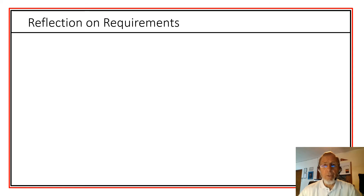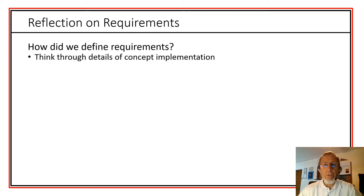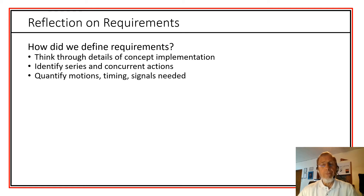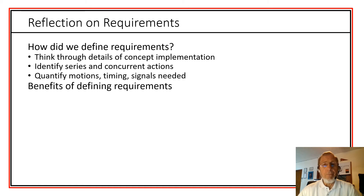Let's think about how we defined these requirements. First, we had to think through the details of how we would implement the concept — what specific actions were required to achieve what was necessary. Sometimes we had series of actions, sometimes concurrent actions, and we need to identify which fall into each category. Then we had to quantify the motions, the timing, and the signals.